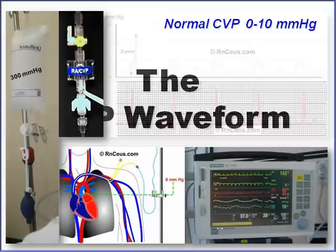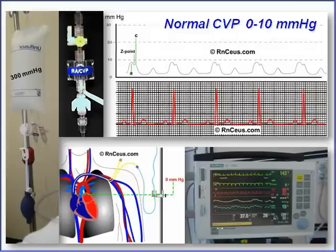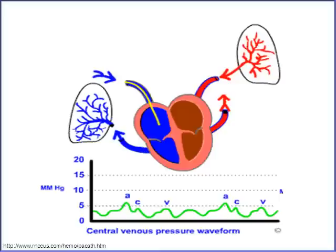First we're going to tackle the CVP waveform. We need the cardiac monitor with the waveforms, a central line in the patient to monitor the right atrial pressure or central venous pressure, the transducing tubing and pressure bag, and the ability to compare the EKG to the CVP waveform.